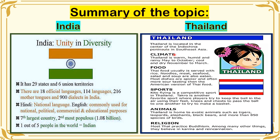Next is Thailand. Thailand is located in the center of the Indochina Peninsula in Southeast Asia. Its climate is warm, humid, and rainy during May to October, and cool and dry from November to March. Thai food is usually served with rice, and Thai people also like spicy food. In sports, kite flying is a competitive sport in Thailand. Takraw is another favorite sport where players try to keep the ball in the air using their feet, knees, and chest to pass it and make a basket. Thailand is home to exotic animals such as tigers, leopards, elephants, black bears, and more than 850 species of birds. The religion in Thailand is, of course, Buddhism — they believe in karma and reincarnation.